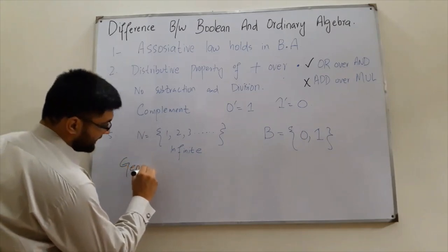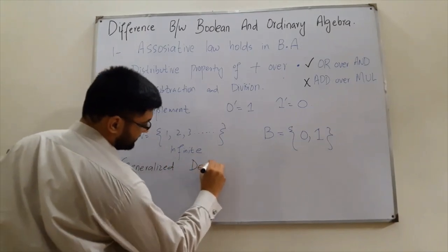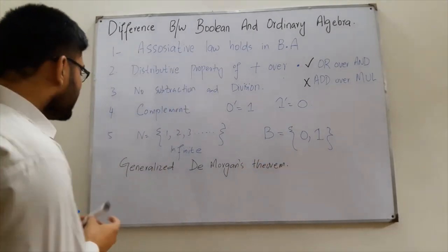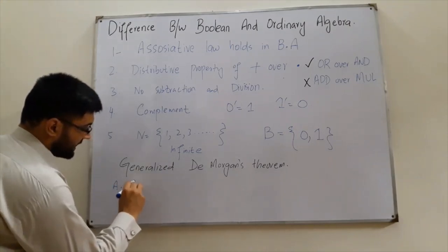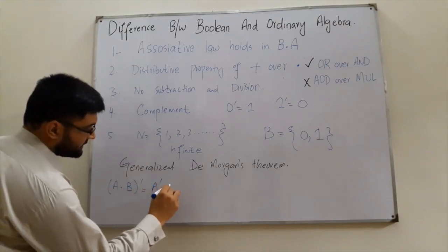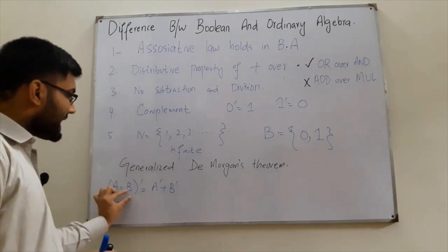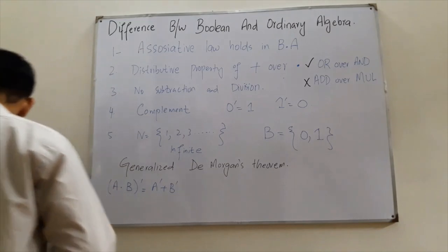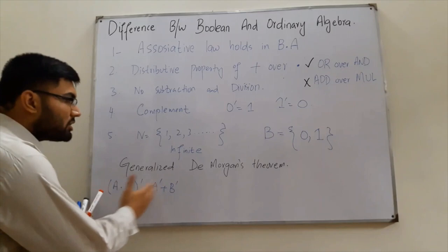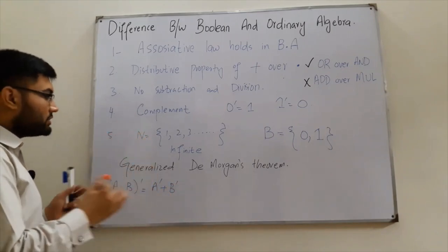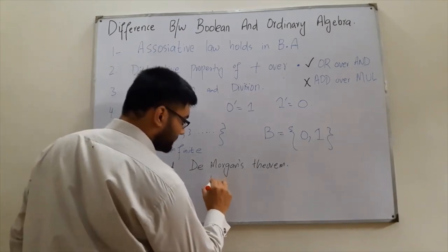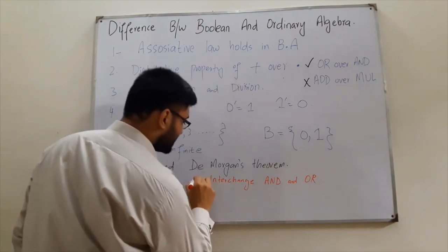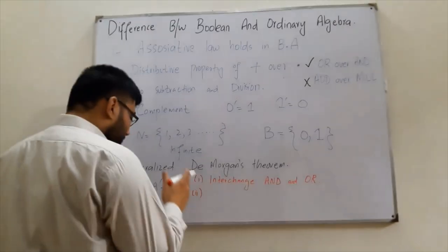Next we talk about the generalized De Morgan's theorem. As we've seen, if you have an AND operation and it is complemented, you convert it into an OR operation and complement the literals. A literal is any input — for example, A is one literal and B is another. In the generalized form, any number of literals can be used. The two steps are: first, interchange the AND and OR operations; second, complement the literals.